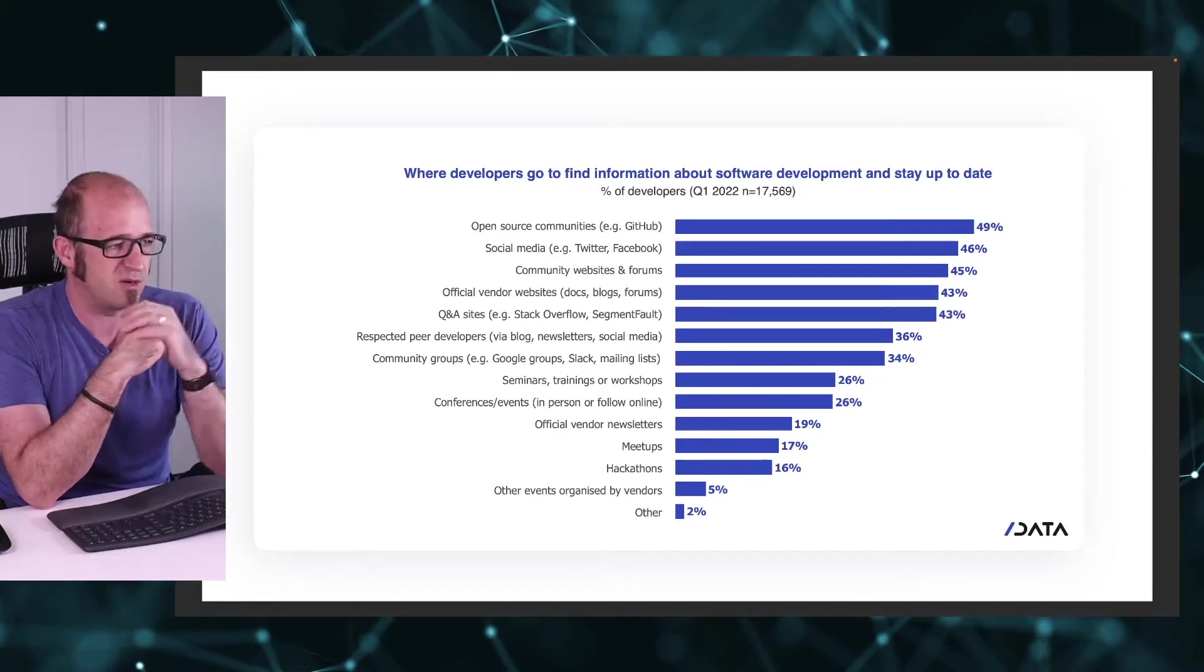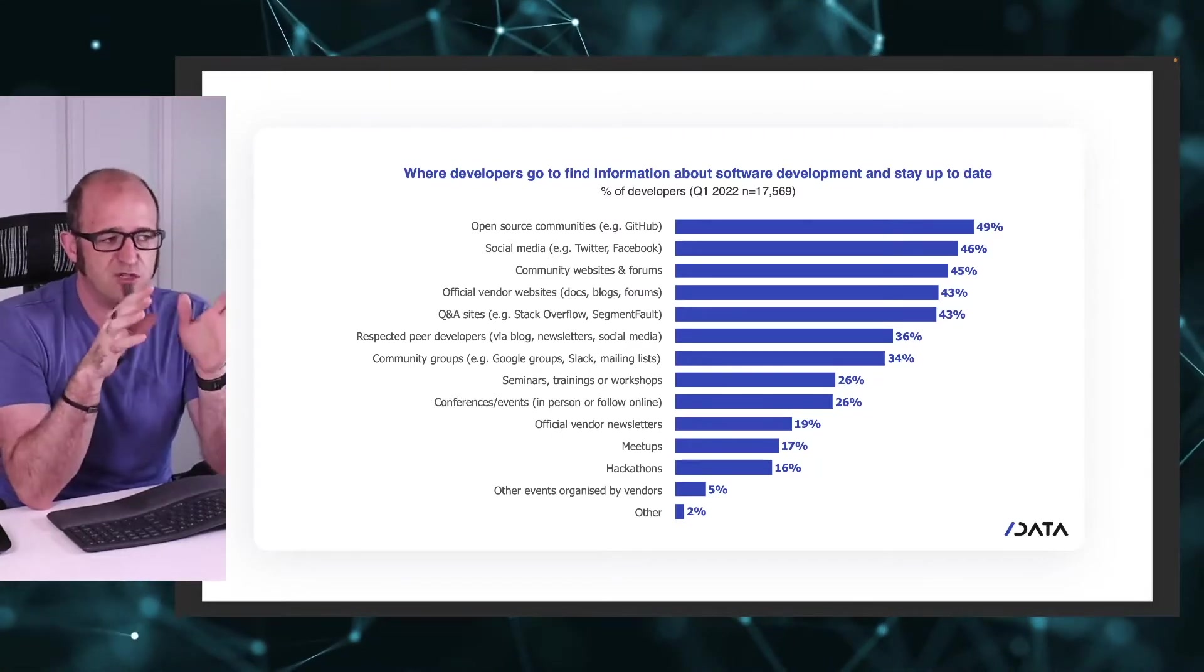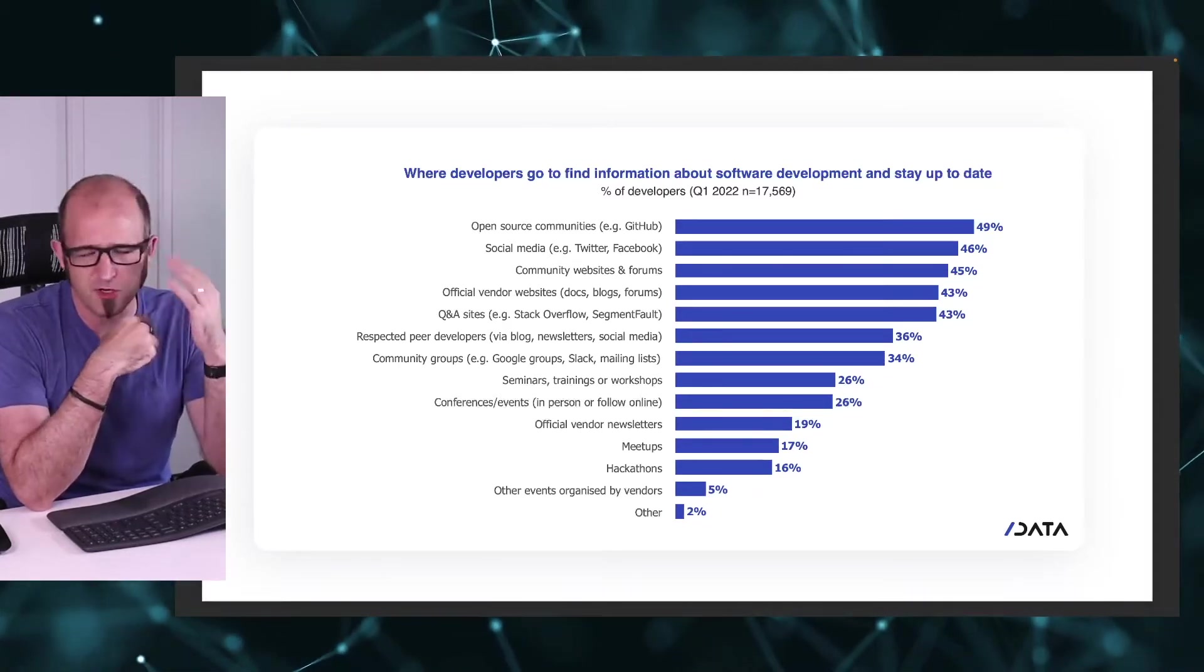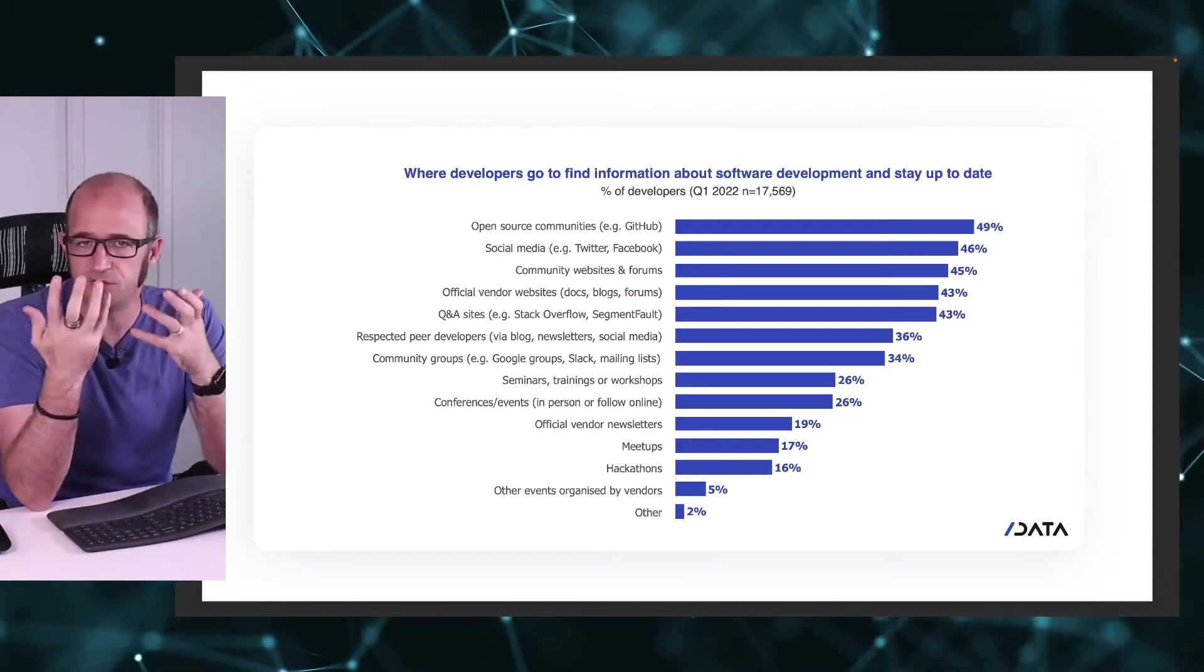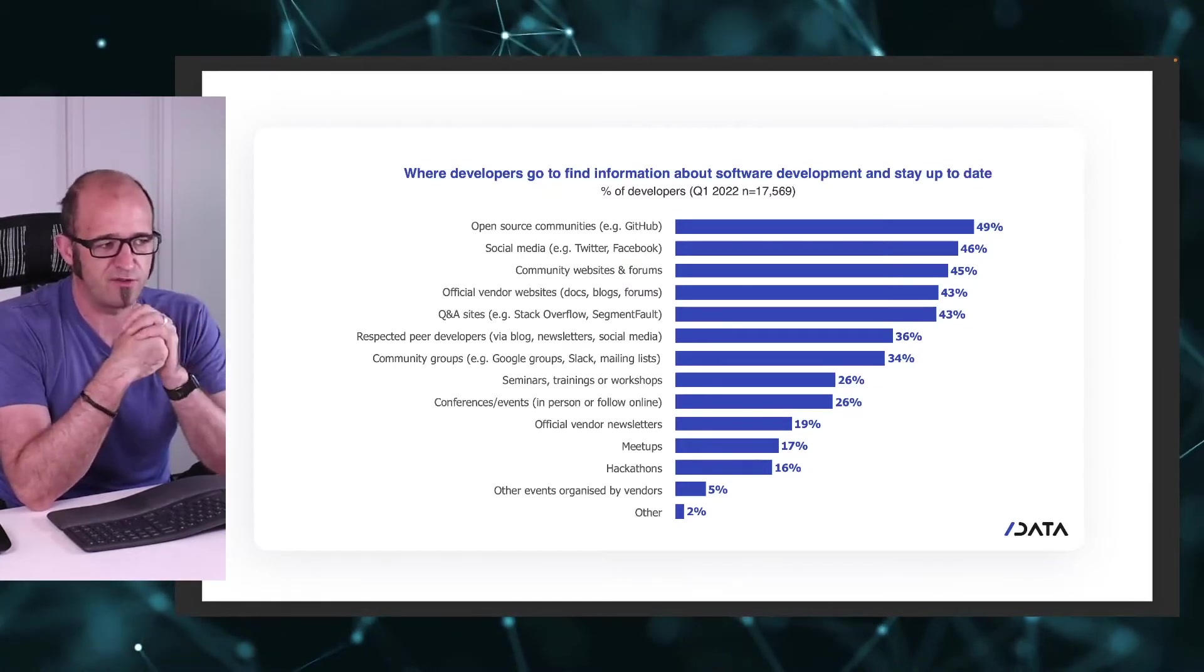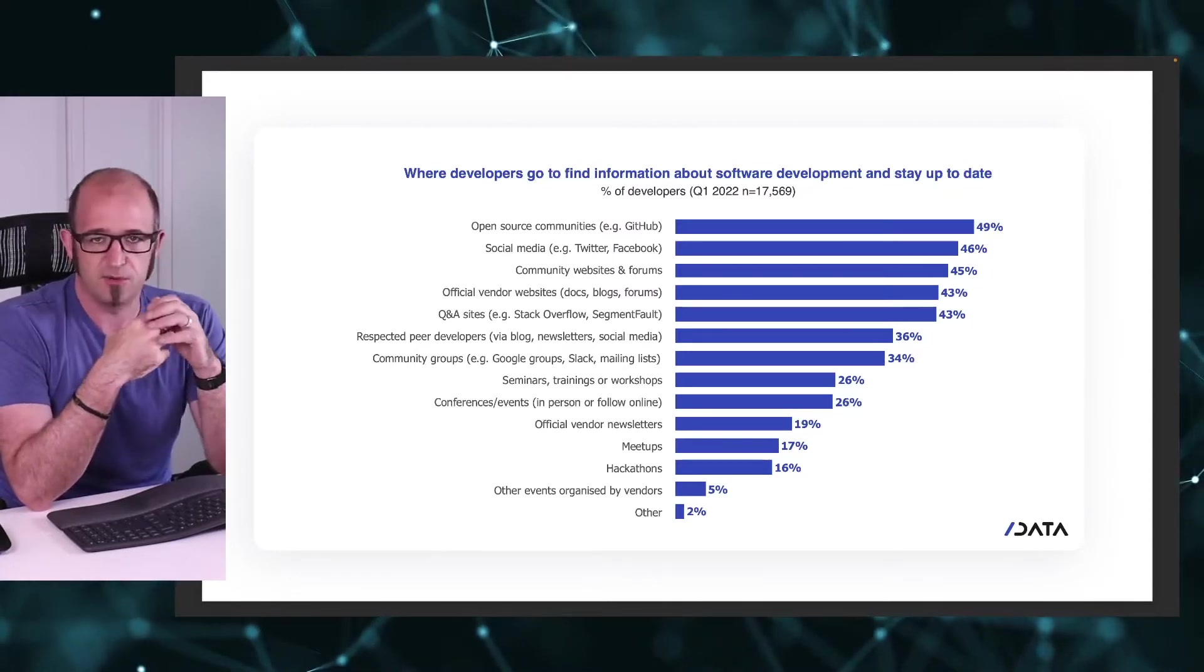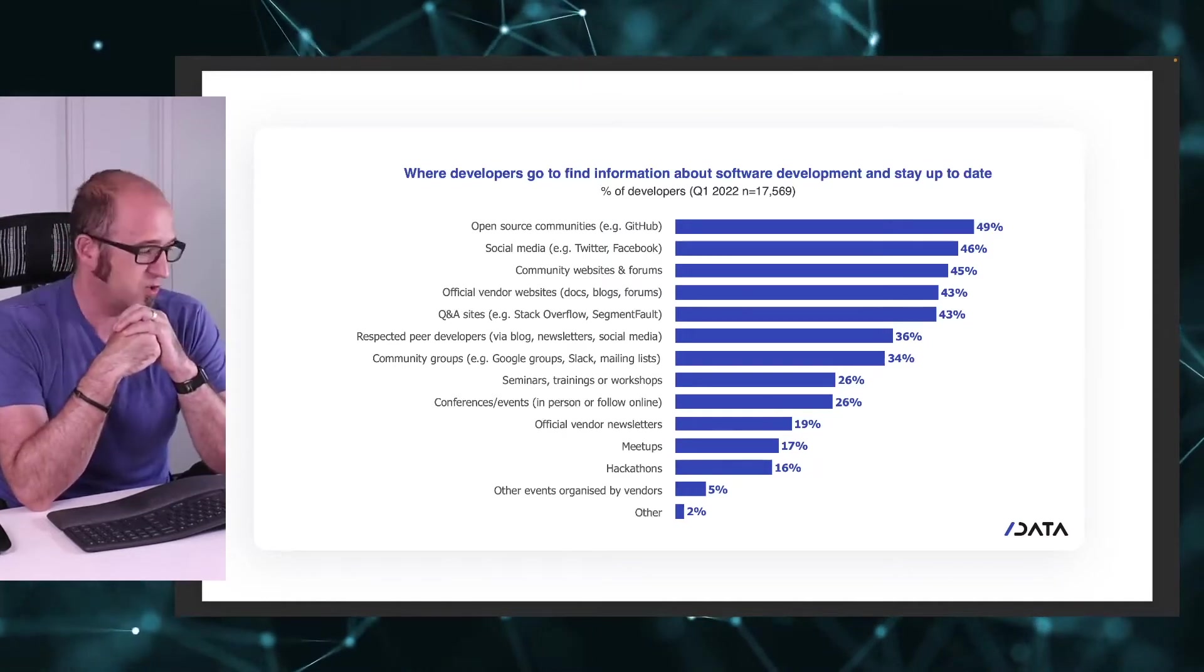The final two that I really want to zone in on are official vendor websites and Q&A sites. Official vendor websites, I think a lot of that's going to be documentation, which is not particularly surprising because documentation and blogs keep people up to date with what's going on. And also Q&A sites like Stack Overflow. These are very popular websites where people go to solve problems. I think there's probably a certain amount of learning that naturally happens along the way there as well.